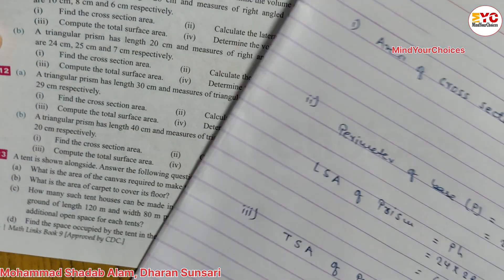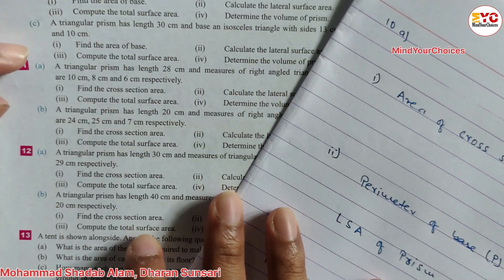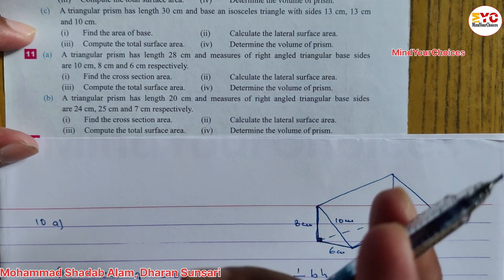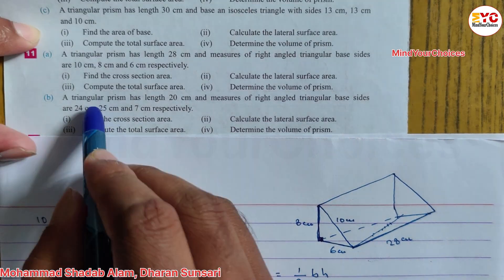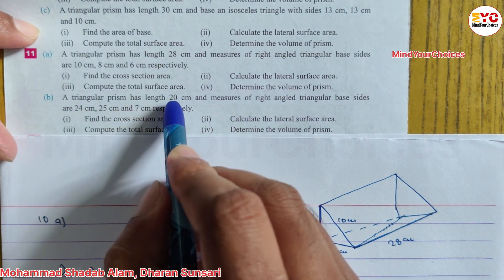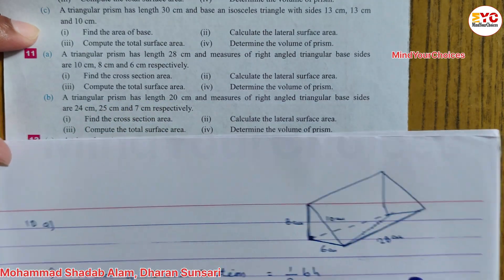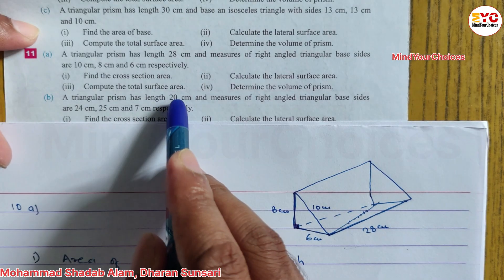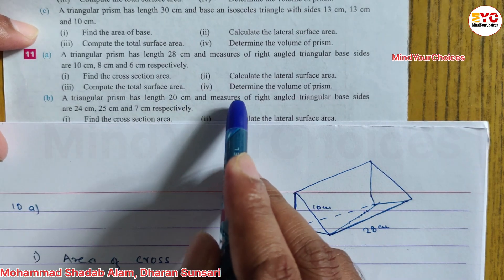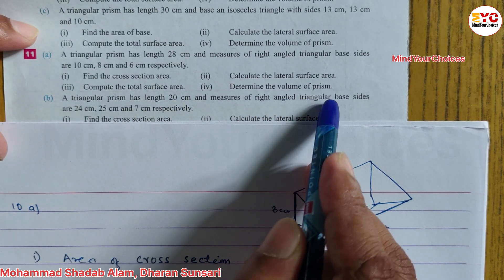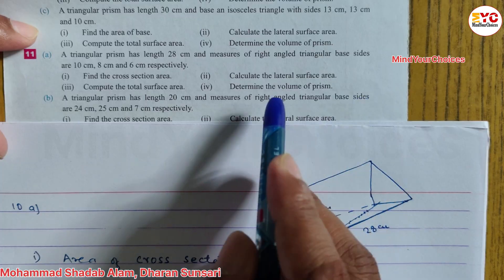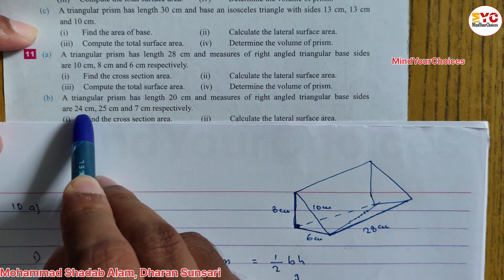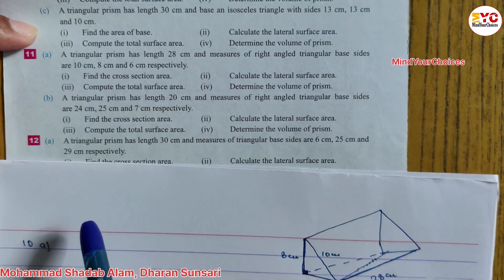Hope you understand question number 11A. Now 11B — a triangular prism has length 20 cm. So in the place of 28 we write 20 cm. And the measures of the right-angle triangular base — same type of question — with three sides.